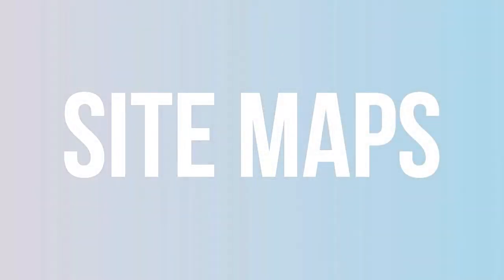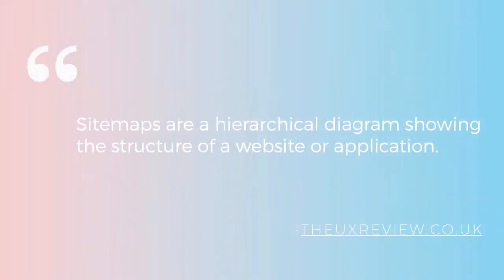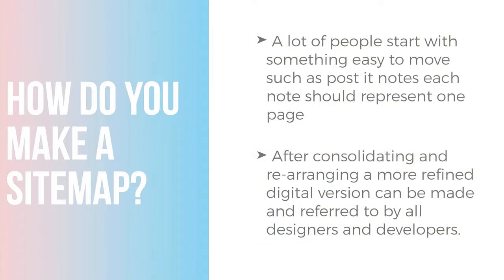The next item to talk about before you design your website is site maps. Site maps are a hierarchical diagram showing the structure of a website or application — the official definition from the UX review.co.uk. Site maps are a way to organize the information and navigation of your website. After creating a site map, you should have a complete map of all the pages and sub-pages in your site. One way to tackle your site map is to start by writing down the names of all the pages on post-it notes and stacking them in rows under the homepage. Your first row will end up becoming your main navigation and generally should not be more than seven to eight pages.